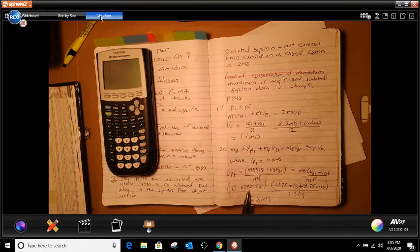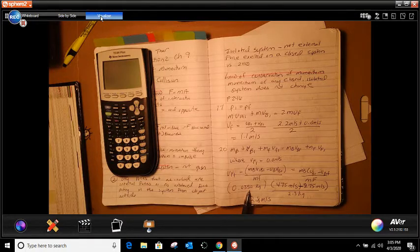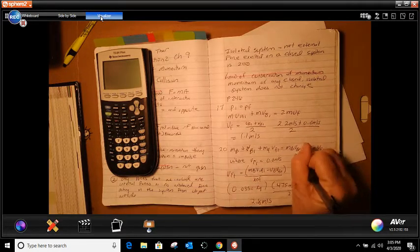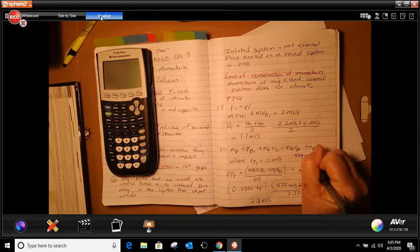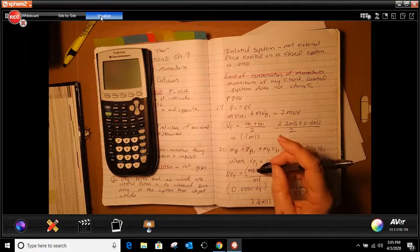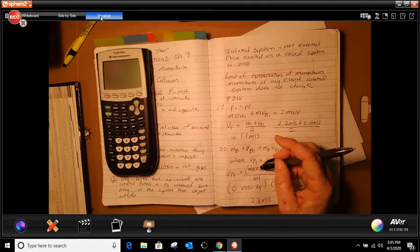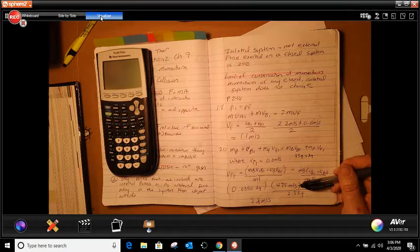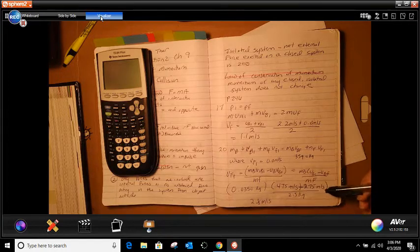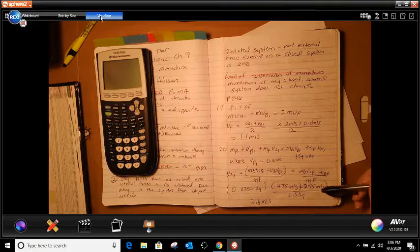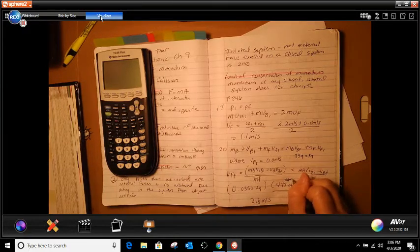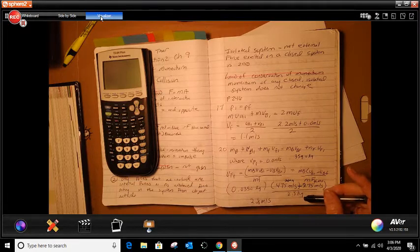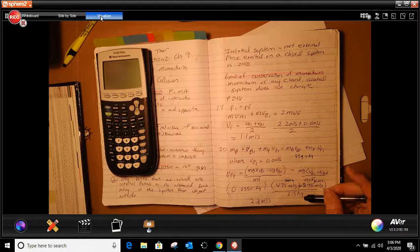So here we go, we're going to take the 0.0350 kilograms, which what we're doing is we're taking the 35 grams and we're converting it to kilograms and that is the mass of the bullet. And then it tells us we're going to take 475, that is the velocity of that bullet and we're going to subtract that by 275, that's when it's exiting. This is when it's entering and this is when it's exiting the bag. And then we're going to divide that by 2.5 kilograms because that is the bag itself of how much it weighs for the flour.